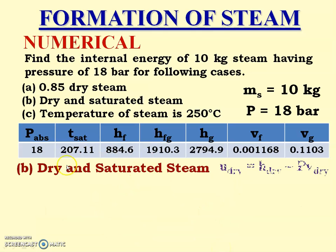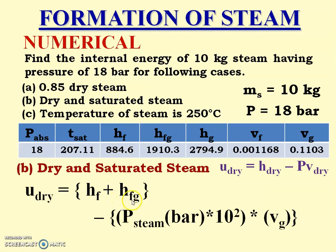Case B is dry and saturated steam. The equation is: u_dry = h_dry − p·v_dry = hf + hfg − (pressure in bar × 10² × vg). We have hf and hfg from the steam table, pressure from the numerical, and vg from the steam table.